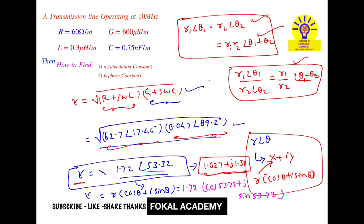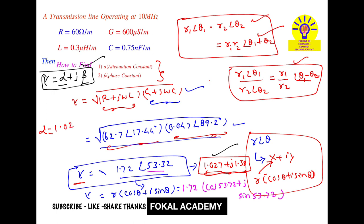We want the attenuation constant and phase constant. The propagation constant gamma always equals alpha + jβ. Comparing this with our result of 1.07 + j1.38, we get alpha = 1.07 nepers per meter (the attenuation constant), and beta = 1.38 per meter (the phase constant). This is the process of finding the attenuation constant and phase constant.